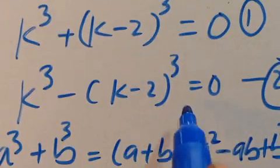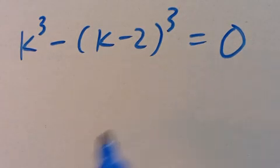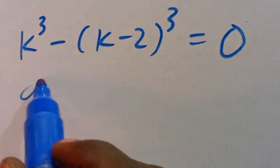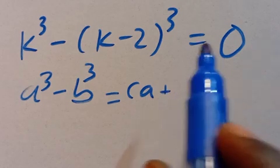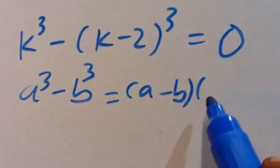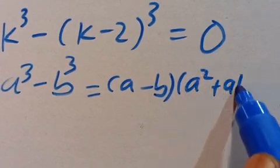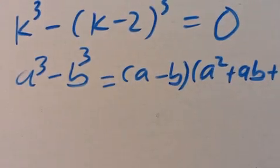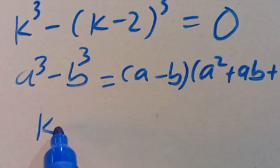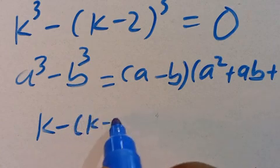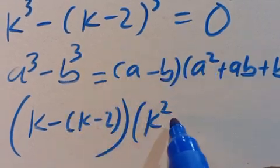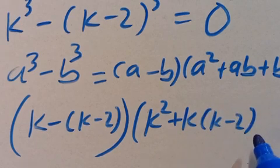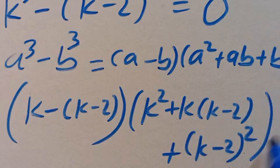Now let's go to case two. We apply the difference of cubes formula: a cubed minus b cubed equals a minus b, multiplied by a squared plus ab plus b squared. From here, a minus b is k minus (k minus 2), multiplied by k squared, plus k times k minus 2, plus k minus 2 in parentheses to the power of 2. We close it, equals zero.